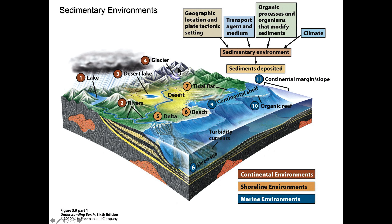Moving on to glaciers as a mechanism for sediment transport and generation: they scrape rock from the sides of mountains, producing generally U-shaped valleys. The rock and mineral grains they carry act like an abrasive grinding its way down the valley. Eventually this material may reach a lake or pile up in a delta on the shoreline.